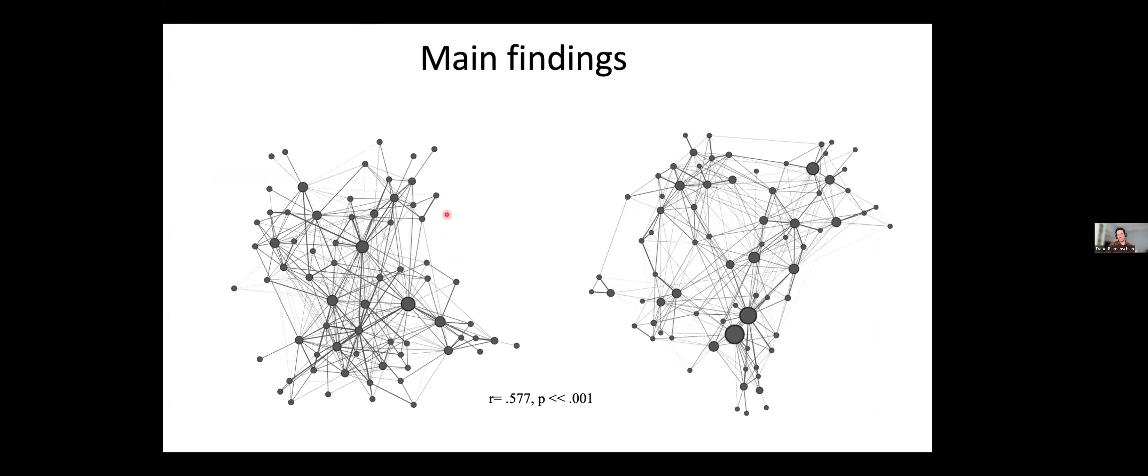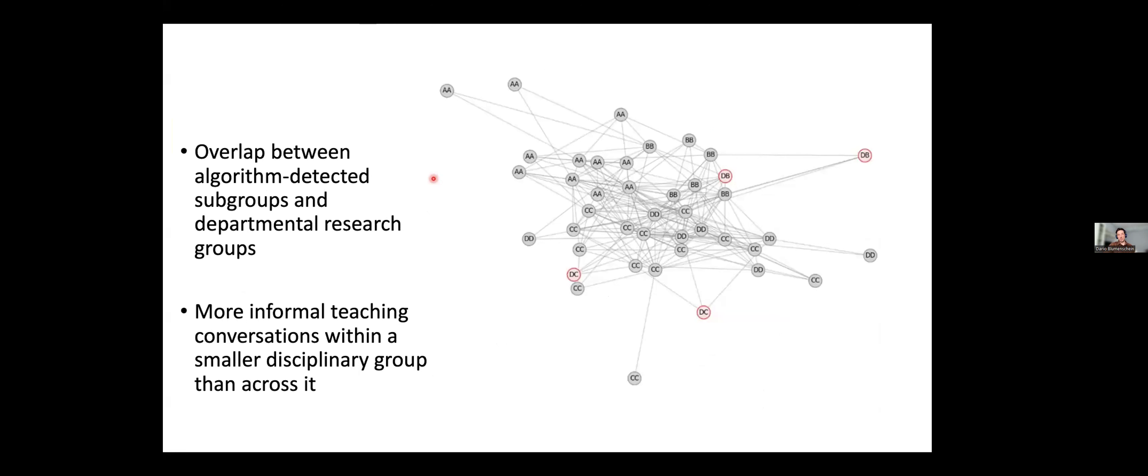Because we realized that we tend to talk both about teaching and research with the same people, we started looking also what is the role of research groups at the department. And then we ran what they call the community detection algorithm, which is an algorithm that basically looks at just raw data without any demographic information about gender and belonging to a research group and so on. It just looks at relationship between people. And the algorithm detected in the graph that we have four subgroups. And for us, that immediately became very interesting, because we know that at the department, we also have four research groups.